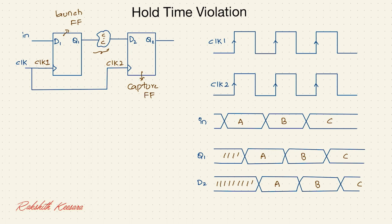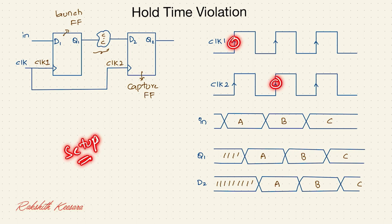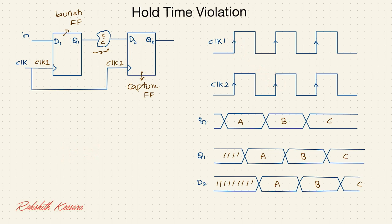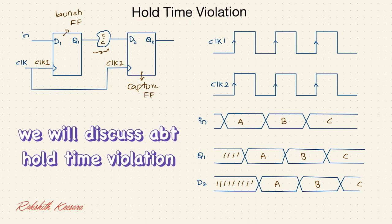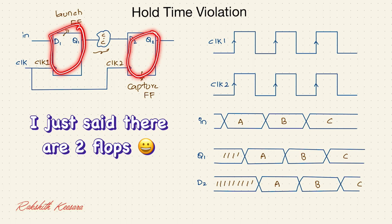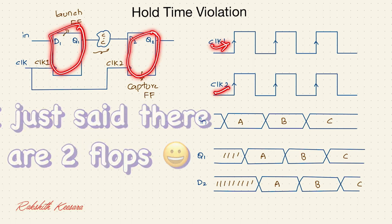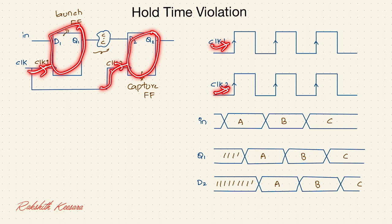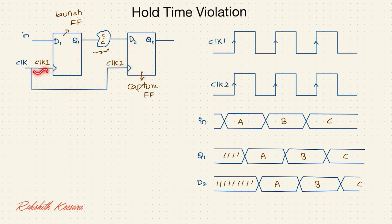Hey guys, welcome. In the last lecture we discussed about setup time violation — what we should consider while calculating setup time, the distance between two clock edges. If you missed that video please go back and watch it. In this lecture we are going to look at two clocks. Ideally both clocks are the same, but when I introduce some skew they may change, so to maintain clarity I have renamed them.